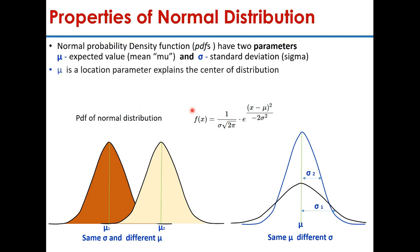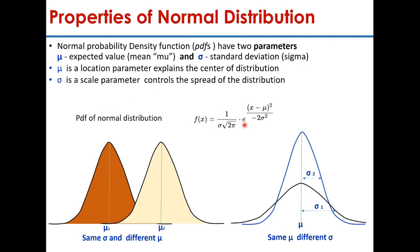The equation of the probability distribution function of a normal distribution is: f(x) = 1 / (σ√(2π)) × e^(−(x−μ)² / (2σ²)). Here, mu is called the location parameter, which explains the center of the distribution, and sigma is called the scale parameter, which controls the spread of the distribution.